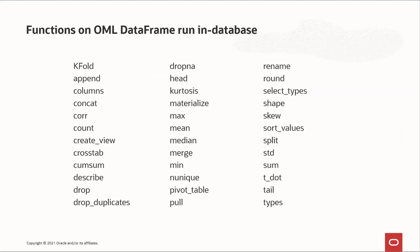In its first release, OML for Python provides these overloaded functions that operate on OML DataFrame proxy objects. Many powerful functions are available — for example, describe for data summarization, merge to join data, and mean, median, kurtosis, and correlations, among others, for statistical functions.